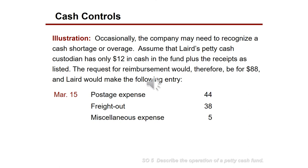Sometimes accountants handling petty cash records may need to recognize a cash shortage or overage. Assume Laird's petty cash custodian has only $12 in cash plus the same receipts. The request for reimbursement is $88. The entry is similar to before, but with one dollar missing and no receipt to back it up: debit Postage Expense $44, Freight-Out $38, Miscellaneous Expense $5, and Cash Over and Short $1, then credit Cash $88.